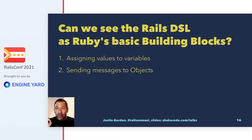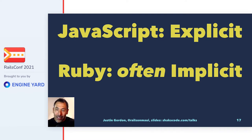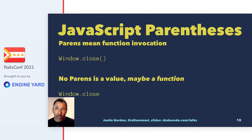So let's look at the Rails DSL's basic building blocks. The two fundamental ones are: assigning values to variables, and sending messages to objects. Now I want to do a compare and contrast of JavaScript and Ruby — JavaScript is very explicit and Ruby is often very implicit. With JavaScript, parentheses always mean function invocation; no parentheses means no function invocation. That is absolutely critical.